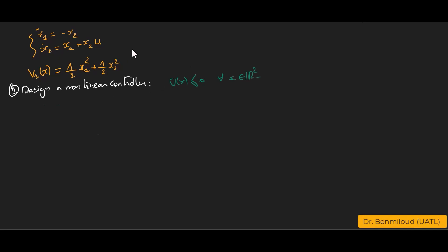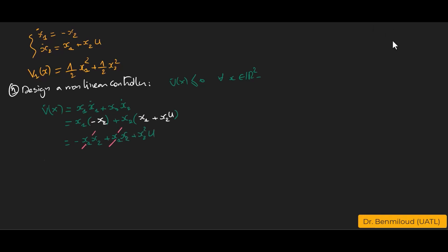Let us compute the derivative of the candidate Lyapunov function, which is equal to x₁ẋ₁ + x₂ẋ₂. Substituting the system dynamics, we get x₁(-x₂) + x₂(x₁ + x₂u). The x₁x₂ terms cancel, giving V̇(x) = x₂²·u.